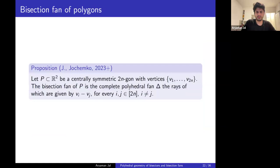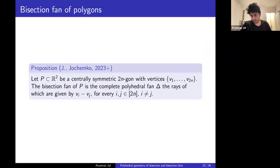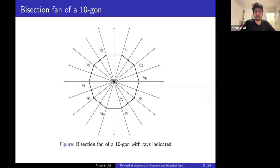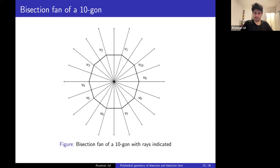The proof strategy was largely case-by-case, with nothing unified across the cases. It relied on explicitly computing an inequality description of the bisection cones, making an educated guess about what the bisection fan would be, and then proving that was indeed the case. For the tropical unit ball, the bisection fan has a very explicit combinatorial description called the fan of bisected ordered partitions. The main takeaway is that we extended the existence theorem of bisection fans to these other cases.